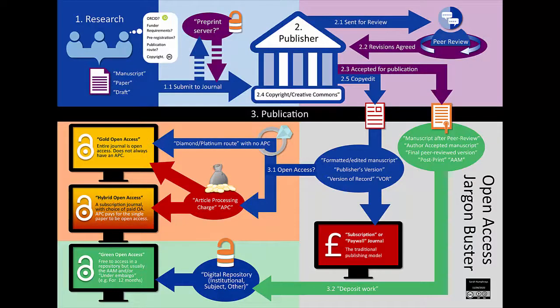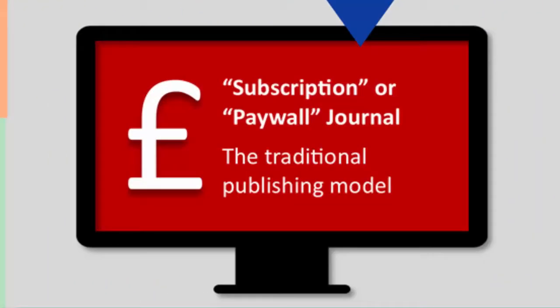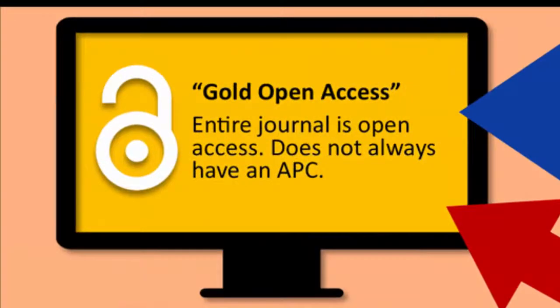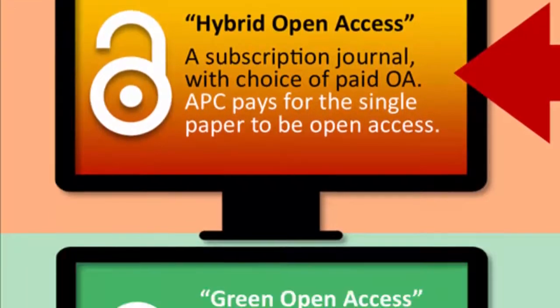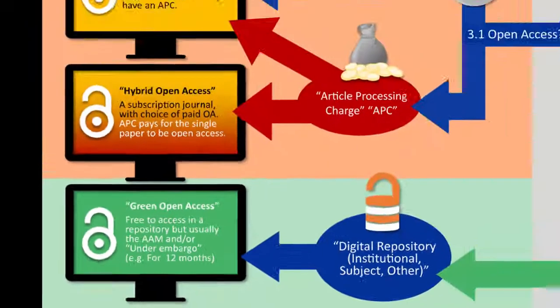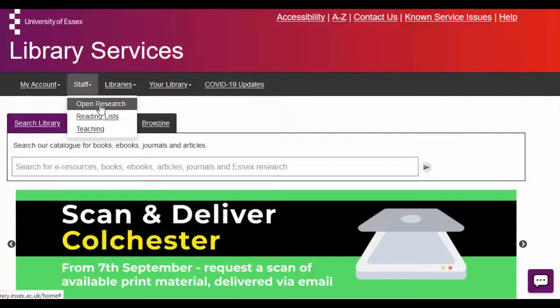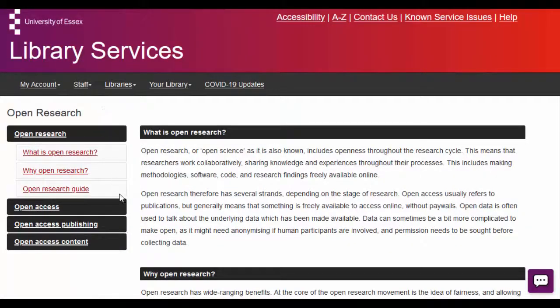In summary, there are five main routes to publishing your research: the traditional publishing model, diamond open access, gold open access, hybrid open access, or green open access. Decisions about which route to follow need to be made as early as possible in the publishing process, alongside other considerations such as creating an ORCID, funder requirements, and copyright. Further information about open access can be found in our open research guide.